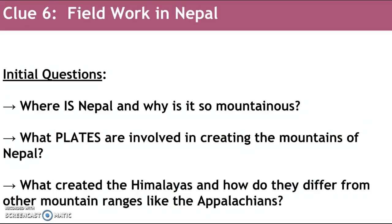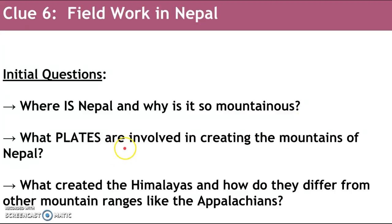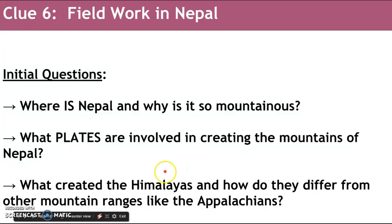So we've finished Clue 6, and hopefully we can answer these questions now. Where is Nepal? It's between India and China. Why is it mountainous? Because it's a continental-continental convergent boundary. The plates involved are the Australian-Indian and the Eurasian plate. And the Himalayas differ from other mountain ranges because of how young they are — they haven't had a lot of time to weather and erode, so they tend to have very jagged high peaks. This has been great — I will see you tomorrow.